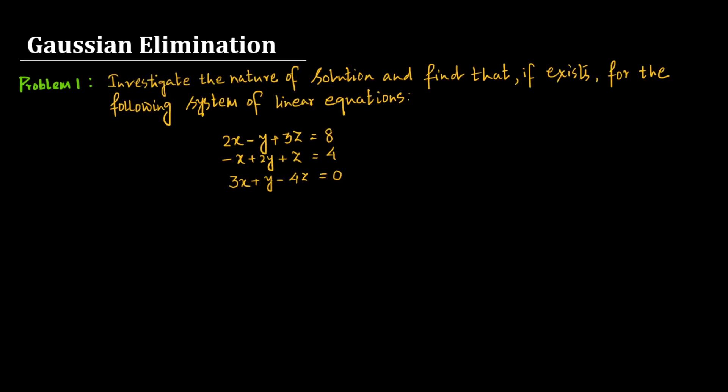The first problem is: investigate the nature of solution and find it if it exists for the following system. 2x minus y plus 3z equals 8; minus x plus 2y plus z equals 4; and 3x plus y minus 4z equals 0. The nature of solution means three possibilities can occur: a unique solution, an infinite number of solutions, or no solution at all.